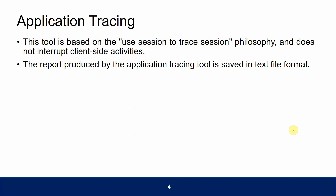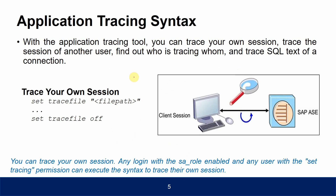Application tracing is based on using one session to trace another session. It does not interfere with client-side activities — it creates a separate session. The report produced by the application tracing tool is saved in text file format.